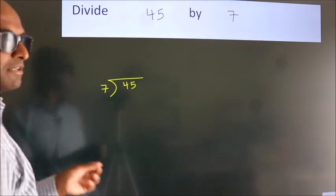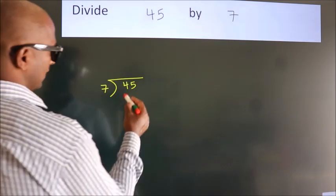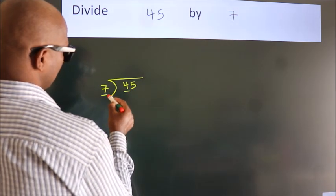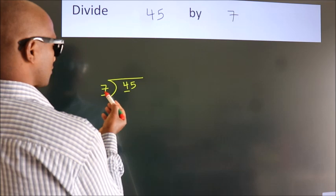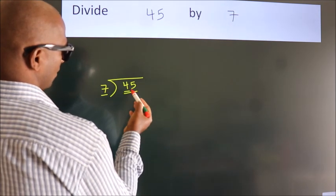This is your step 1. Next, here we have 4, here 7. 4 is smaller than 7. So we should take two numbers, 45.